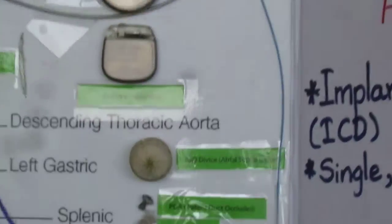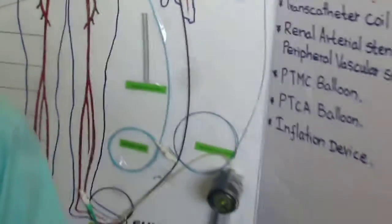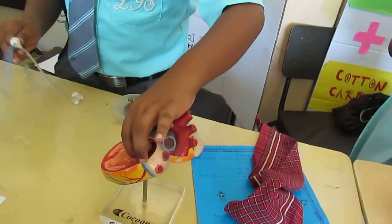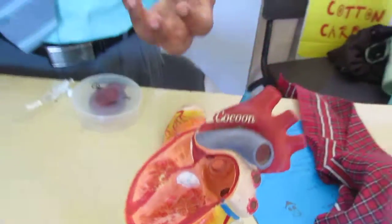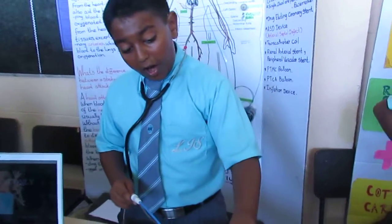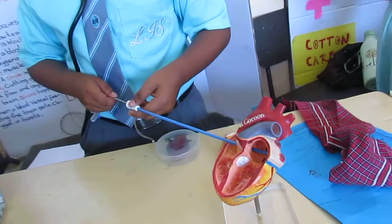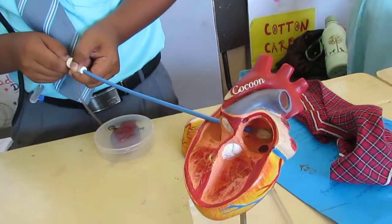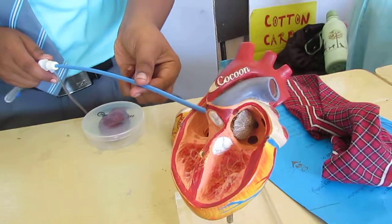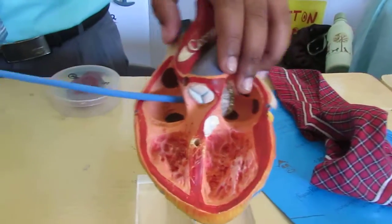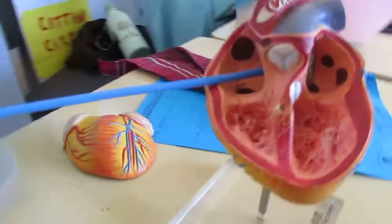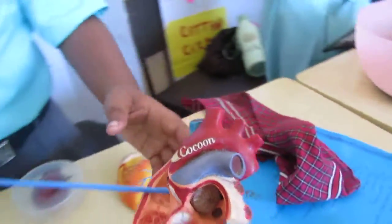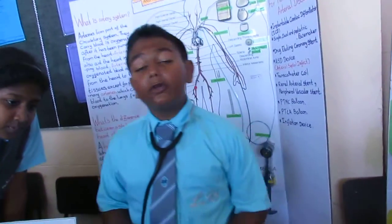Next is the ASD device — the Atrial Septal Defect device. When there is a hole in our heart that we are born with, the person with this hole has difficulty breathing. So we send the device through the hole and the doctor pushes and then pulls it to fill the hole. The hole remains plugged for the person's whole life. The device is made from gold, platinum, and titanium so that it does not rust.